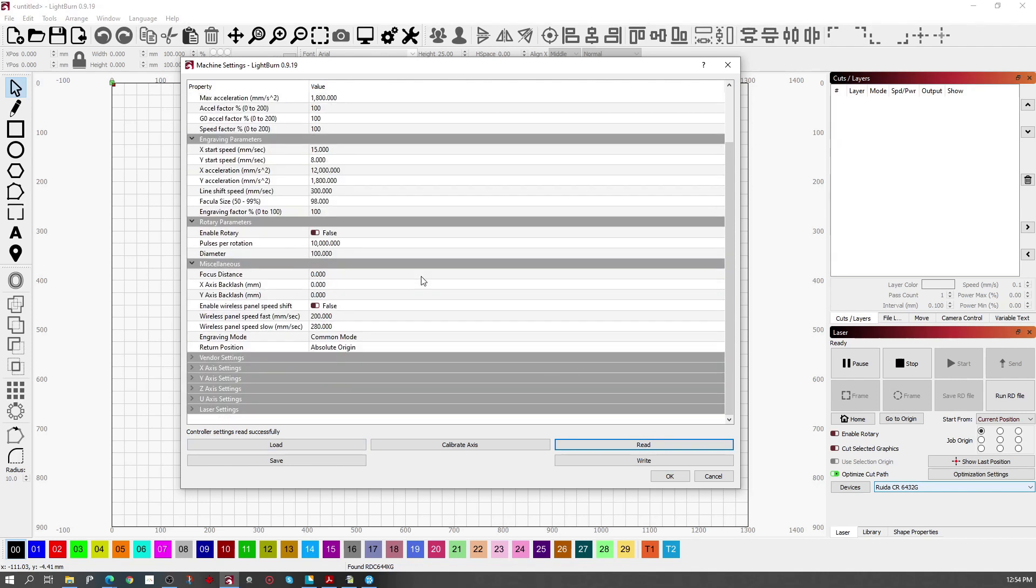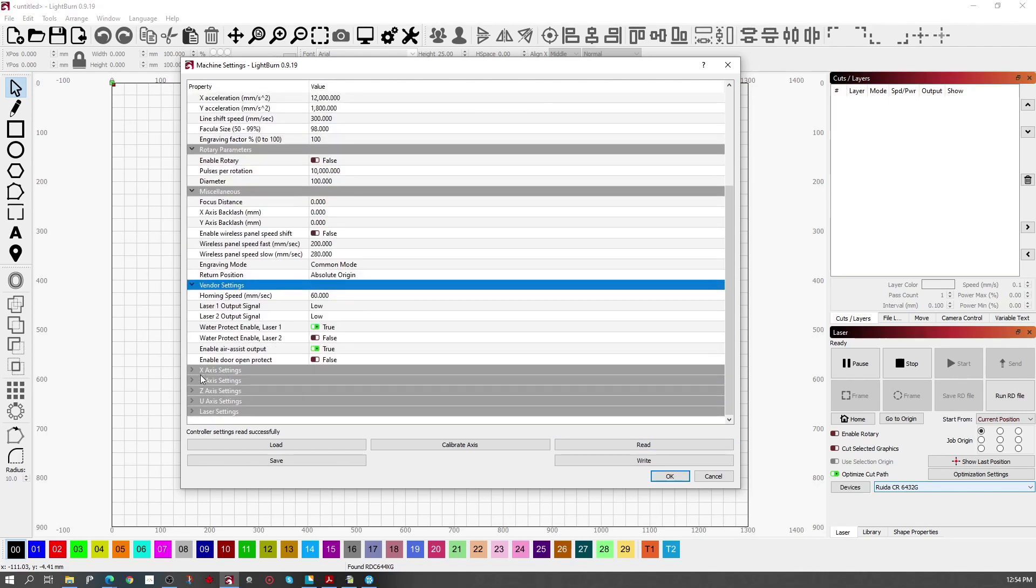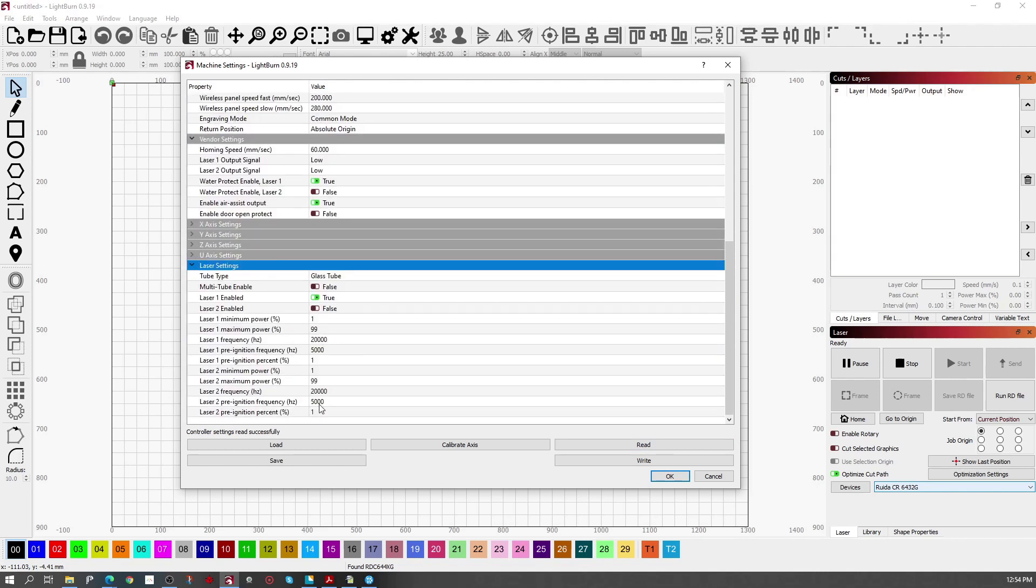You'll say controller settings read successfully and you can change the values that are discussed in the video but they'll be just found in a different location here. And here we have our vendor settings as well as our X, Y and Z axis. And our laser settings are right down the bottom where we can enter the values in there. Once you've finished make sure that you write that information back to your controller to save them into the main board. In the documentation I explain what the different vendor settings are and how to configure those, but use that documentation as well as the video on my YouTube channel on vendor settings on how to configure your new machine.